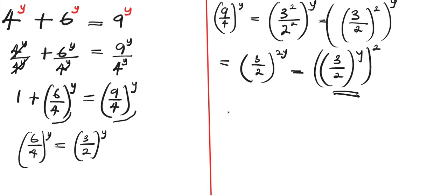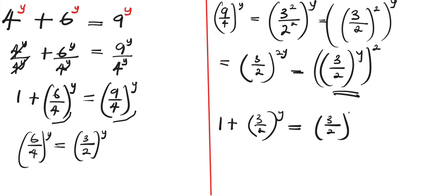The next step is to substitute these into the equation. Instead of (6/4)^y we write (3/2)^y, and instead of (9/4)^y we write ((3/2)^y)^2. So the equation becomes: 1 + (3/2)^y = ((3/2)^y)^2.